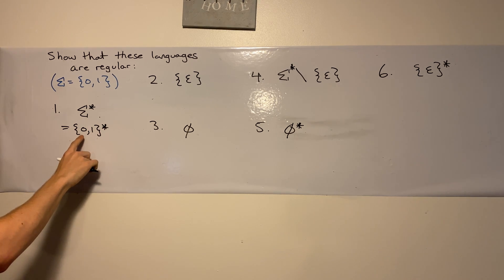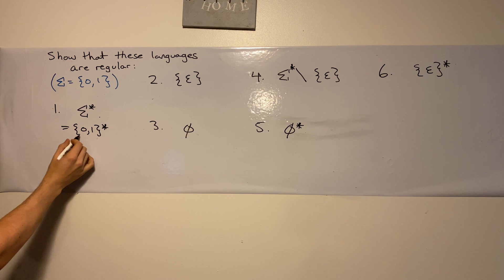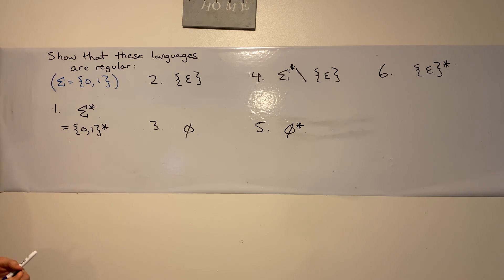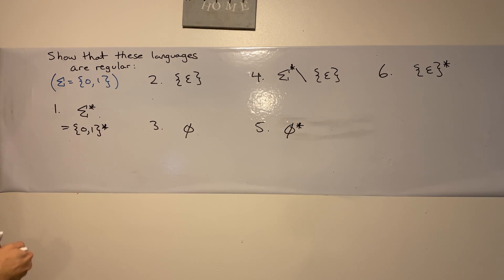That means that we have to pick zero or more characters from this set. Well, this is the set of all binary strings. And for that reason, we can make a really simple DFA that accepts every string because the input alphabet is zero and one.